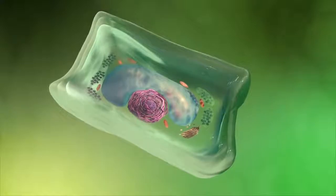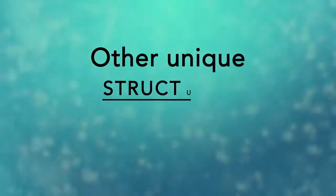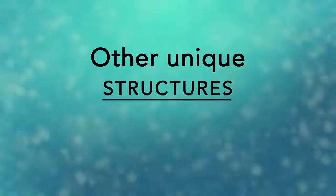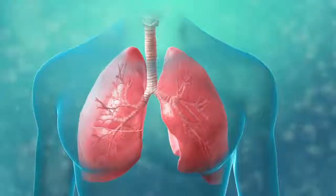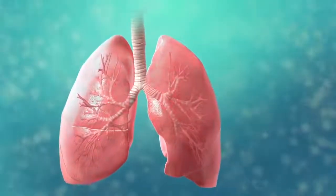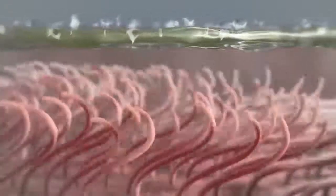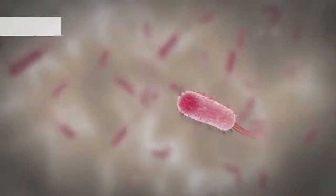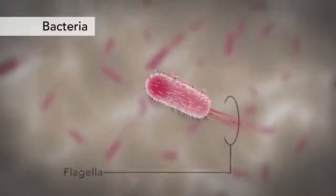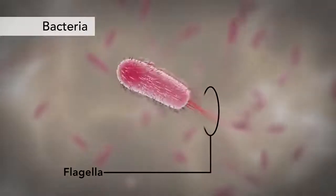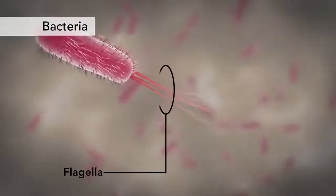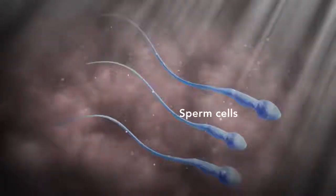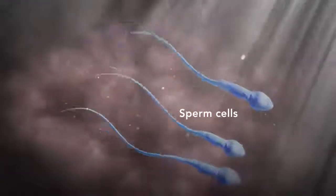Animal cells never have a cell wall. There are many other unique structures that only some cells have. In humans, for example, the respiratory tract is lined with cells that have cilia — microscopic hair-like projections that can move in waves. This feature helps trap inhaled particles in the air and expels them when you cough. Another unique feature in some cells is flagella. Some bacteria have flagella. A flagellum is like a little tail that can help a cell move or propel itself. The only human cell that has a flagellum is a sperm cell.